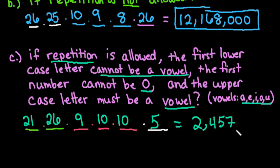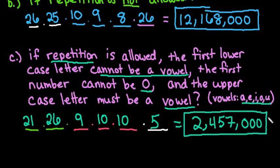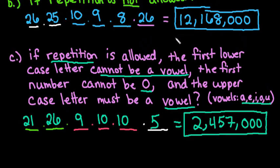With all of these criteria applied, we're down to 2,457,000 different possible passwords. You can see there are a lot of password combinations, and in practice requirements are often even more stringent — you may need at least one uppercase letter, a special character, and a length between six and fourteen characters. The reason is that the longer your password, the harder it is for someone to guess. Thanks for watching — if you have any questions or need additional topics covered, please let me know and check out the other videos.